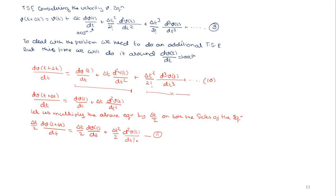Now what we are going to do is multiply the above equation by delta t divided by 2 on both sides of the equation. After multiplying both sides by delta t/2, what we get is: (delta t/2) times dv(t + Δt)/dt equals (delta t/2) times dv(t)/dt plus (delta t squared/2) times d²v(t)/dt². Let us call this equation number 11.